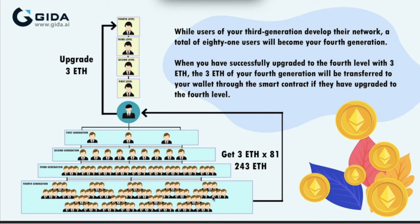You have to do your upgrade first to be eligible to receive the fourth layer's Ethereum. Everyone goes through the same tasks — upgrading from level one to level four. When this group of 81 people upgrade their three Ethereum, it comes to you, because each of them passes their contribution to you just as you did to the people above. Whatever you give out comes back to you from the people coming in.